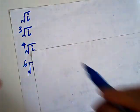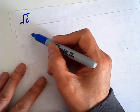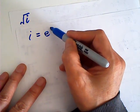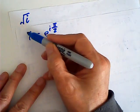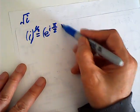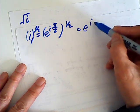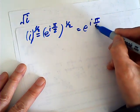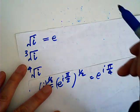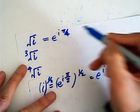First, for the square root of i, I find one root first. i is equal to e to the i times half pi. Therefore, the square root of i is equal to the square root of that, so this will be equal to e to the i times quarter pi. So I have one root: e to the i quarter pi.